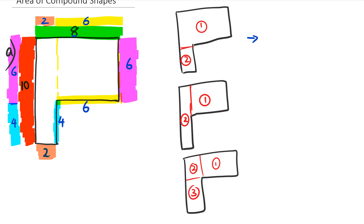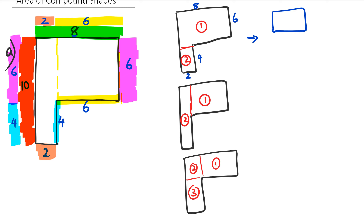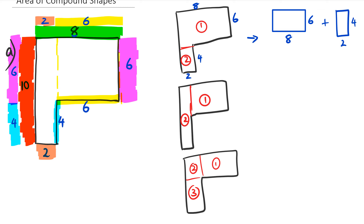Let's try the first method. I can see my measurements: the first rectangle is 8 and 6, and the second one is 4 and 2. So I have two rectangles to add up. Working out the area: 8 times 6 equals 48, plus 4 times 2 equals 8, giving a total area of 56.